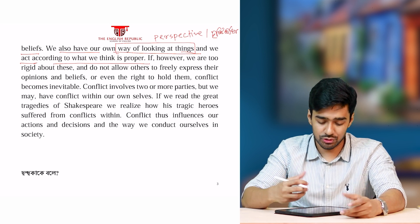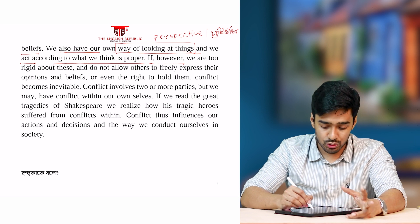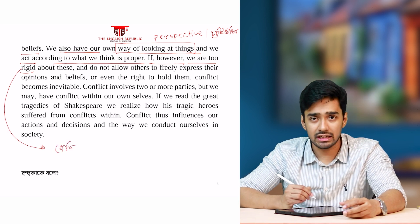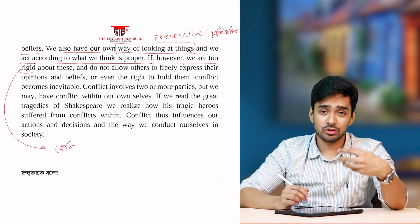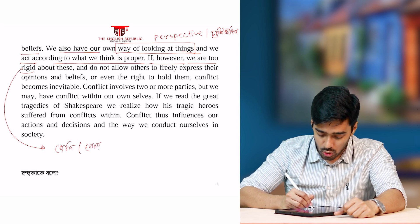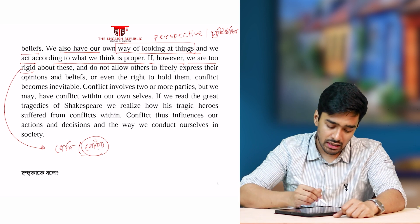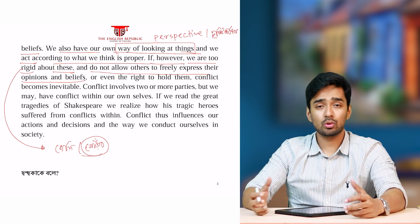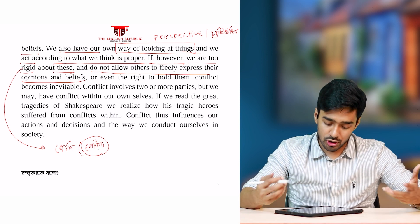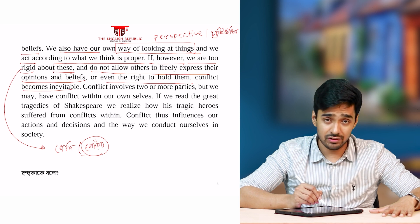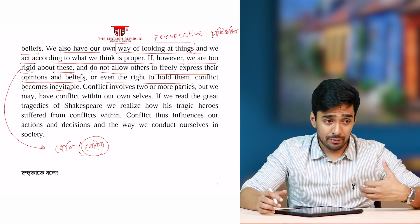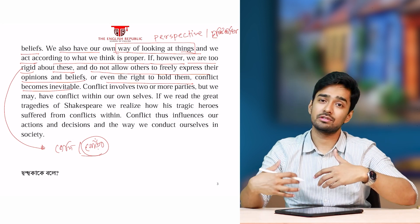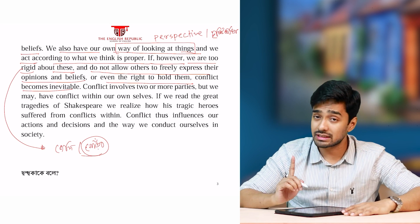If, however, we are too rigid — rigid meaning জেদি (stubborn), holding a position that cannot be negotiated or explained away — and if we do not allow others to freely express their opinions and beliefs, conflict becomes inevitable. We may disagree, but if I hold my position absolutely and you hold yours absolutely, and neither will move, then conflict becomes unavoidable. Still, conflict can be managed.